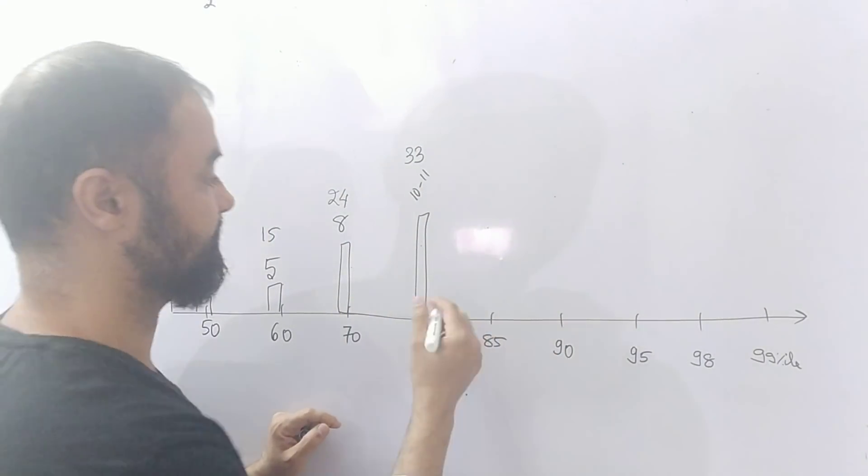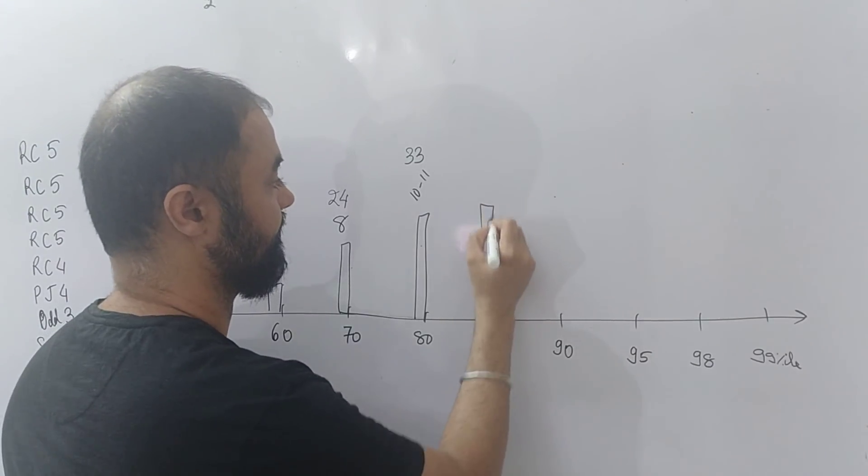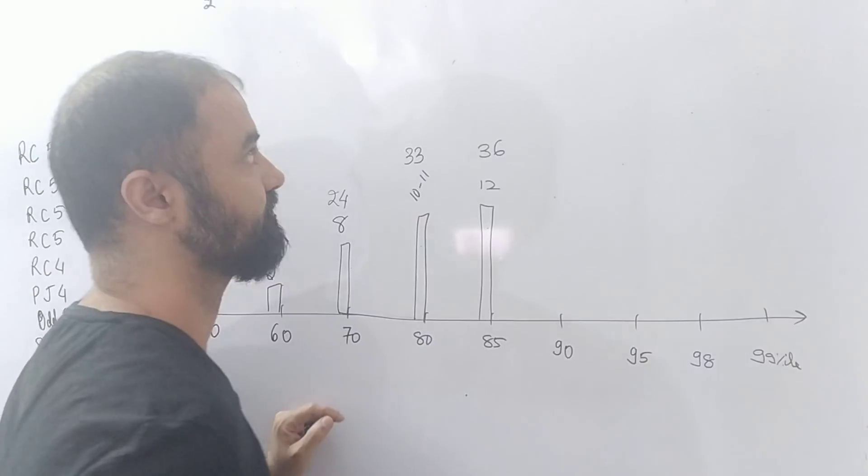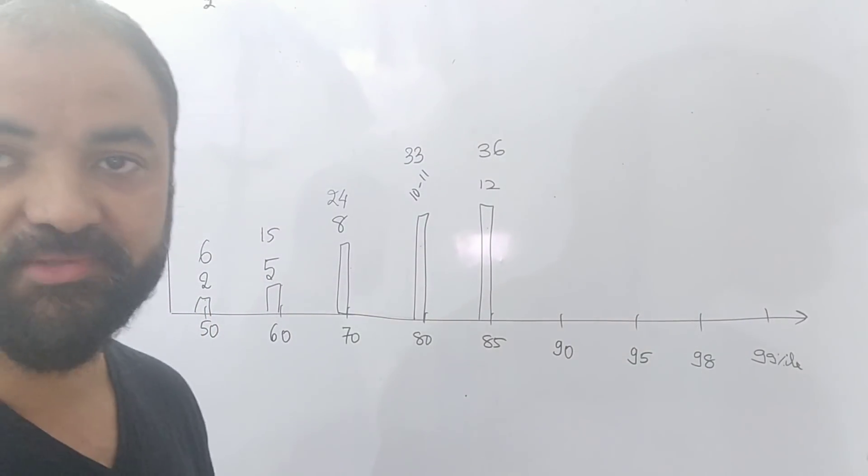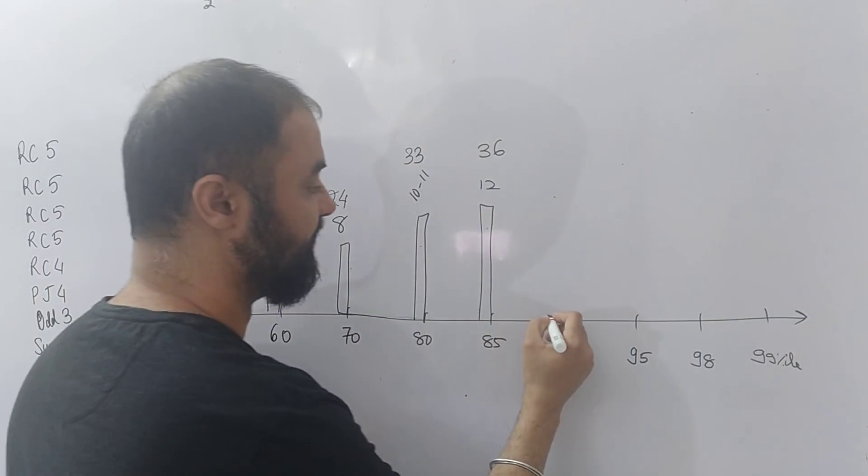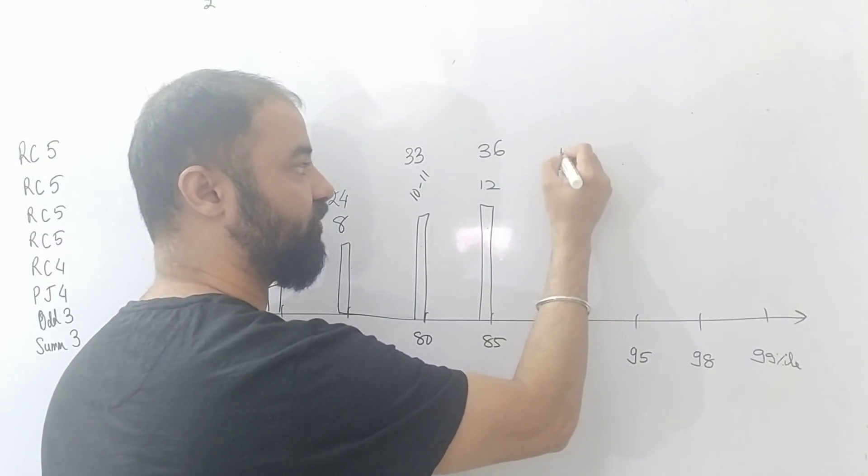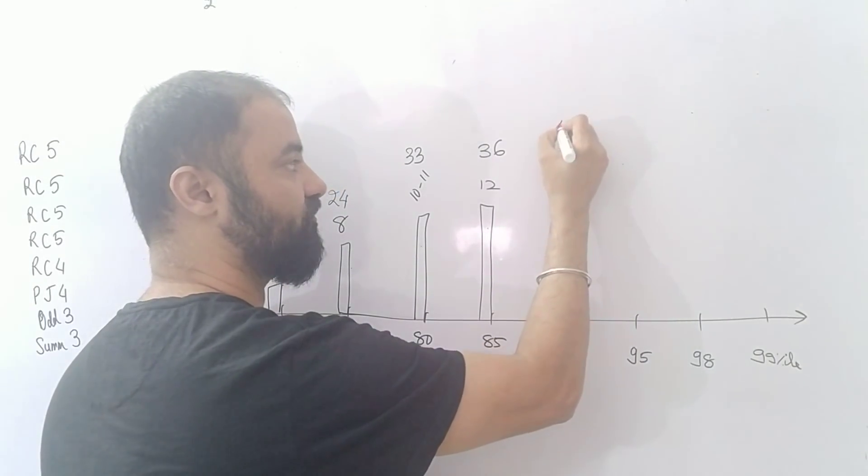So 80 to 85 percentile. Now you can see the gap will reduce, is around 12 questions correct.